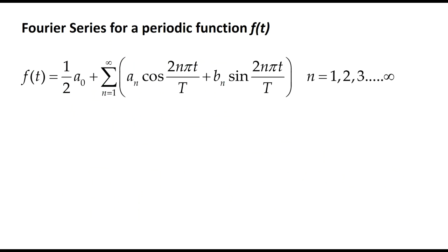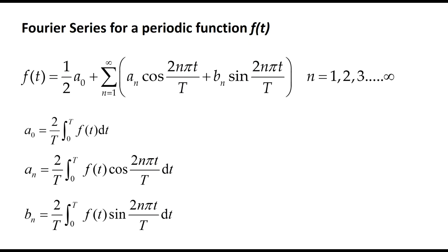We'll see in the first part of the course that we can describe any periodic function — that could be a function of either time or distance — as a sum of cosine and sine functions. This is known as a Fourier series. The sine and cosine functions have a frequency either equal to that of the original function, called the fundamental frequency, or integer multiples of this frequency. These are known as the harmonics of the fundamental frequency. Fourier analysis also provides a technique for finding out how much of each sine and cosine component is needed to describe the function. This is given by the a and b coefficients.